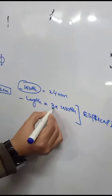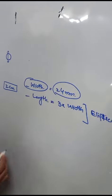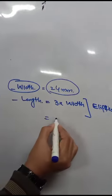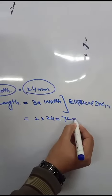Length should be three times the width. So, 3 into 24 is equal to 72 mm.